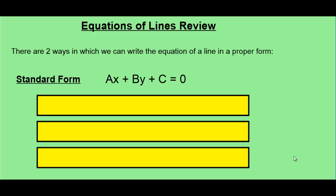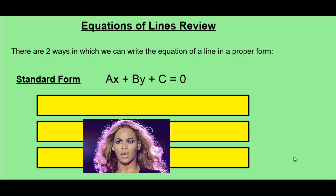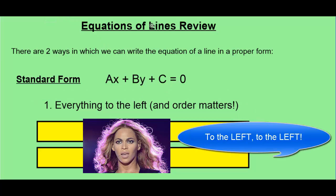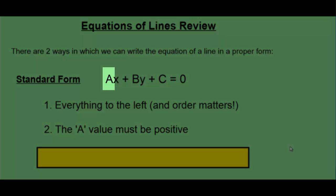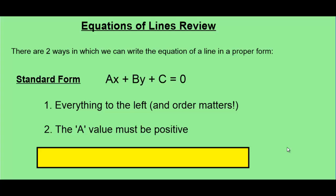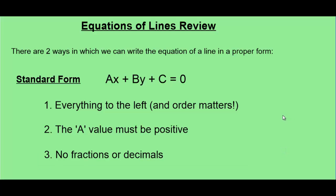For the first rule, make sure you move everything to the left, and the order in which we do it matters: the x term, then the y term, the number by itself, and then equals zero. Secondly, the number in front of the x term must be positive — this is referred to as the a value. If it's not positive, we can multiply the entire equation by negative one and change all of the signs. Lastly, standard form cannot have any fractions or decimals. If there are, we will need to multiply the equation by some number to get rid of those fractions or decimals.